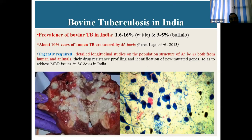Prevalence of bovine tuberculosis in India is 1.16% in cattle and 3.5% in buffalo. About 10% of human TB cases are caused by Mycobacterium bovis. Urgently required are longitudinal studies on the population structure of Mycobacterium bovis from both humans and animals, their drug resistance profiling, and adaptation of new diagnostic genes to address multi-drug resistance issues in India.